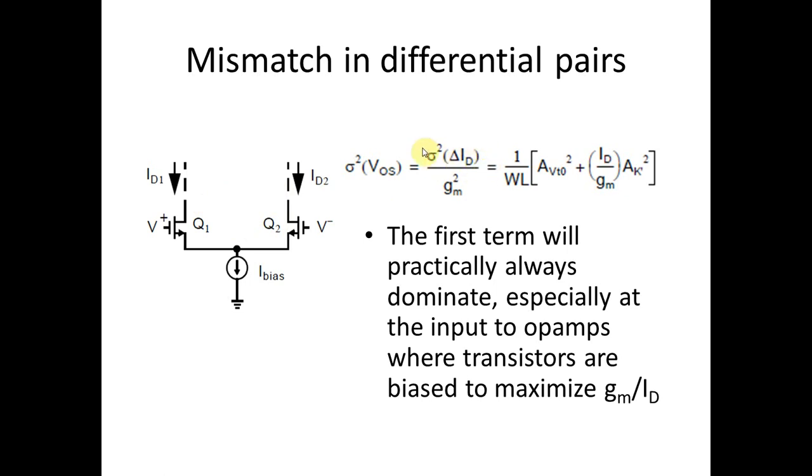Now if we want to translate that drain current mismatch into an input referred offset voltage, all we have to do is divide by the transconductance, the small signal transconductance of Q1 and Q2. So that's what's happening in this expression here. The variance of the offset voltage is just the variance in the drain currents when biased with the same value of VGS divided by the small signal transconductance. The assumption here being that the offset voltage, whatever it is, is very small. So a small signal approximation is perfectly fine. So that's very simple. We get an expression similar to the last one except when we divide by GM squared we get some cancellation of GM here. What we see is a constant term that depends on threshold voltage mismatch and a second term that's arising due to mismatch in K prime of these two transistors.